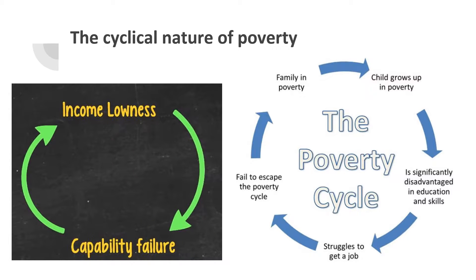It's important to note that there is a complex relationship between income and capabilities, and this sets up a cycle in which each factor often depends on the other. Poverty is often quoted as having a cyclical nature, and cycles are often very hard to break.